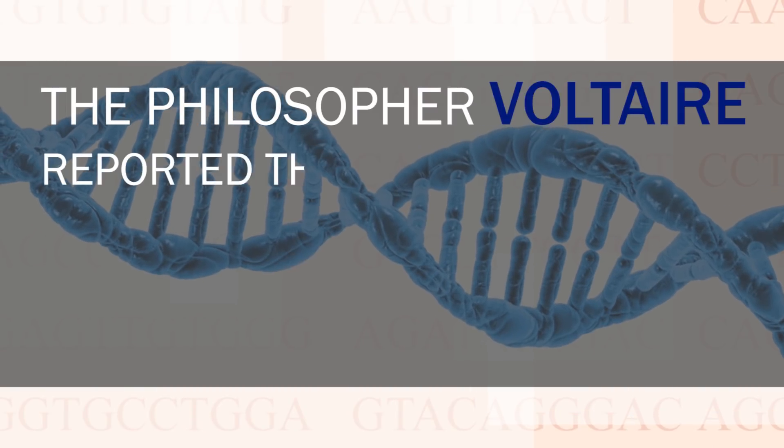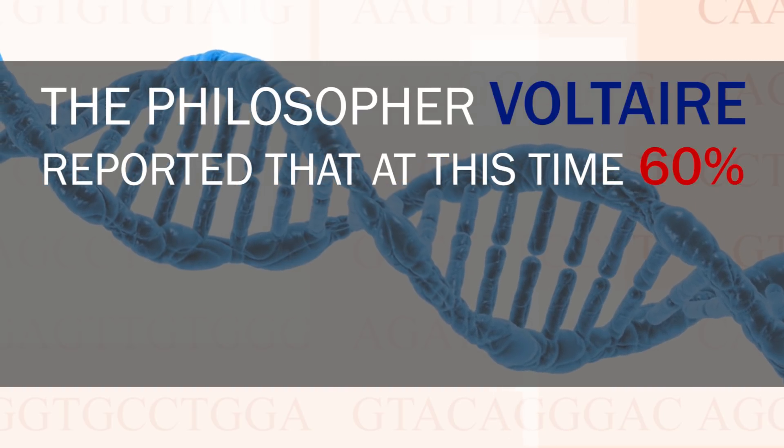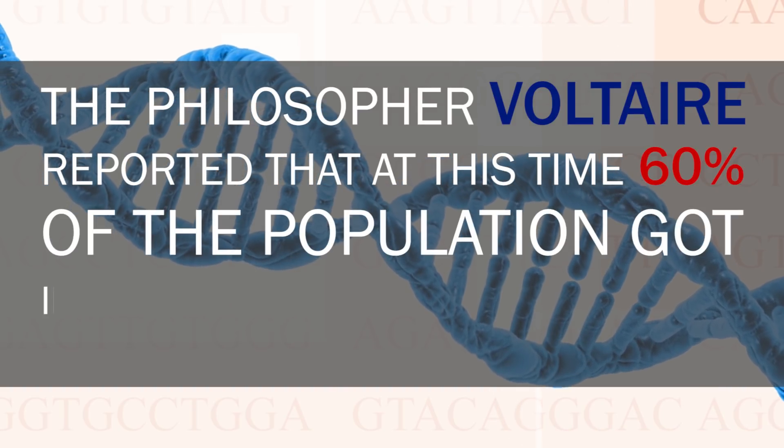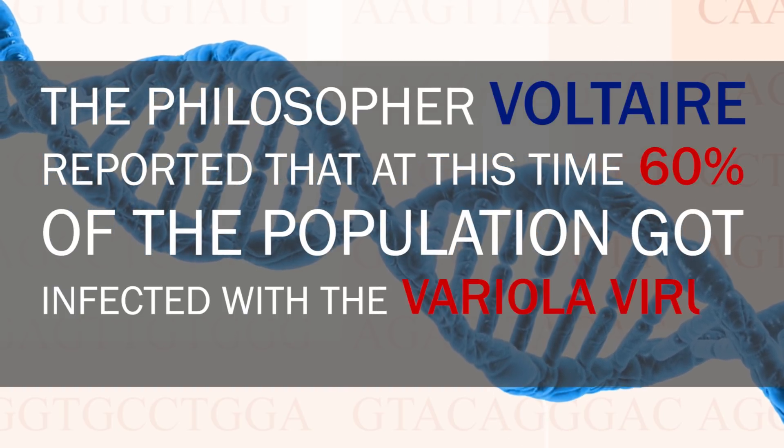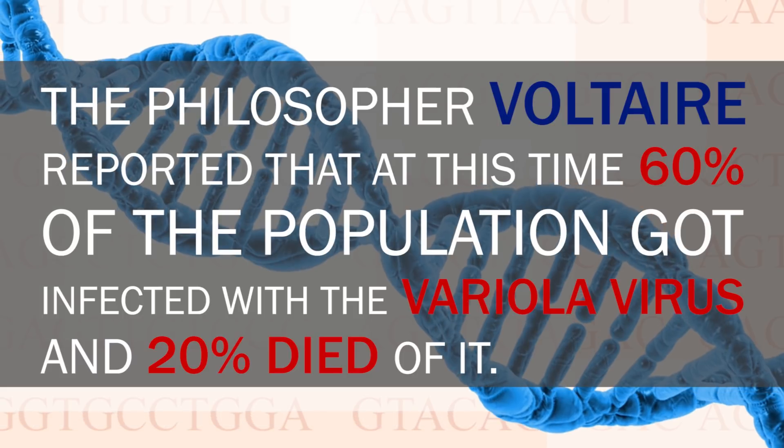During the 18th century, smallpox was a leading cause of death. The disease is caused by infections with the variola virus, and most people became infected during their lifetimes. The philosopher Voltaire reported that at this time 60% of the population got infected with the variola virus and 20% died of it.